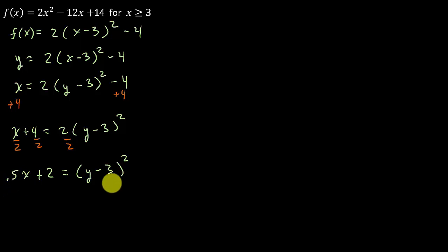Alright, so now we've got to do what? Square root properties. Take the square root of both sides. So this is the square root of 0.5x plus 2 equals y minus 3. Now, don't forget this part. We did the square root properties. Students are always forgetting this. It's plus or minus. Don't forget that.